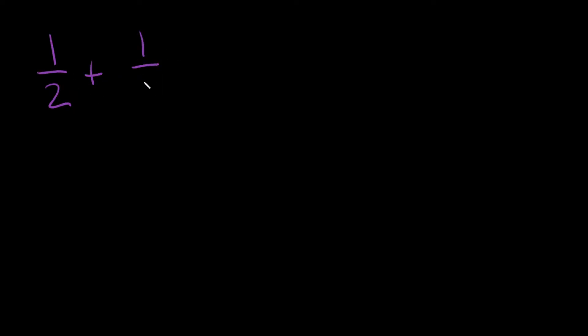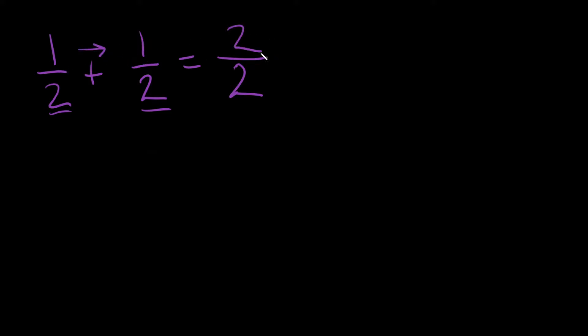So let's get into it. If I give you 1 over 2 plus 1 over 2 — 1 half plus 1 half — how do we do this? Adding numbers with the same denominator is very easy, because you always keep the same denominator. So we're going to put a 2 right there in the denominator. Then you just add straight across: 1 plus 1 is 2. Can we simplify this? Our answer is 2 over 2. Yes, because fractions are just division problems. So 2 divided by 2 is just 1.